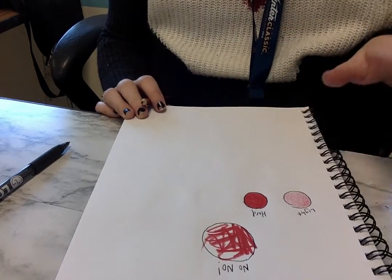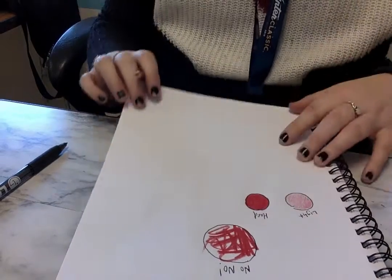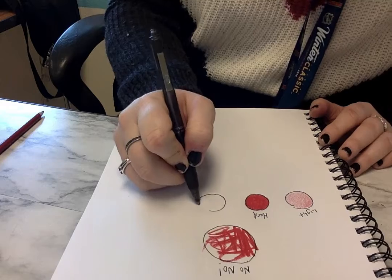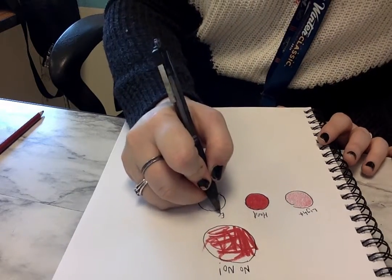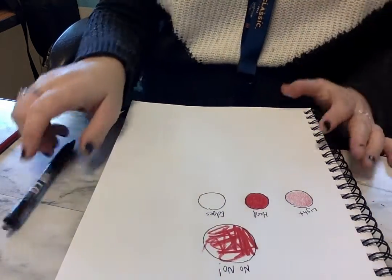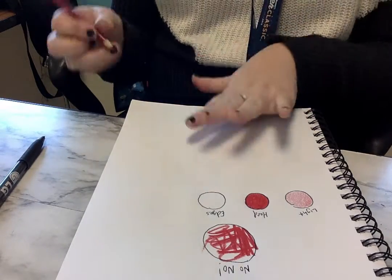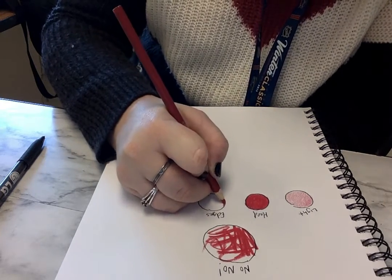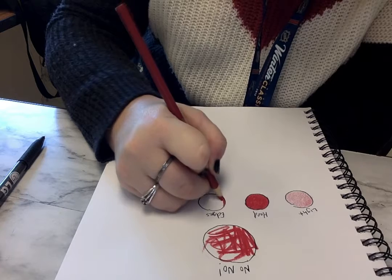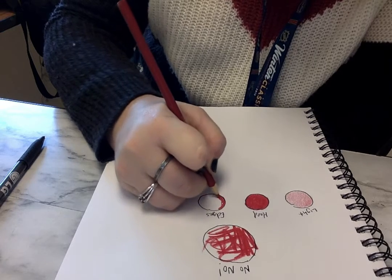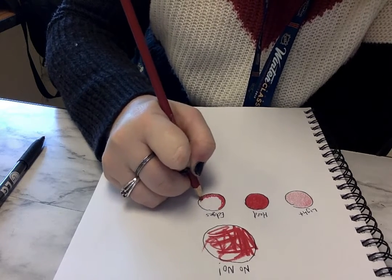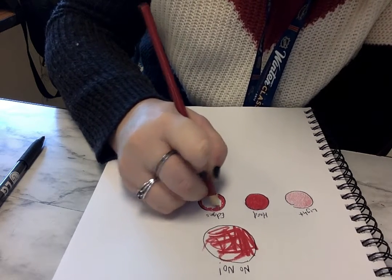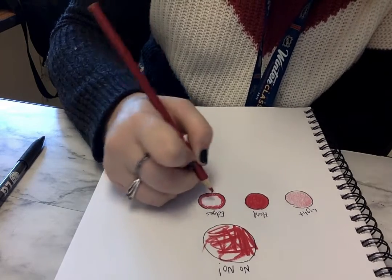The other type that I like to do, I'm going to do another little circle. This one I like to call edges. For this you're going to use different pressures in one circle. For edges I like to go around the edge using hard pressure and again circular motions.